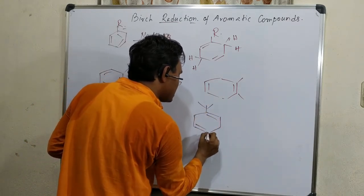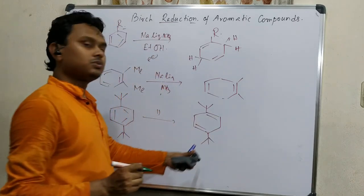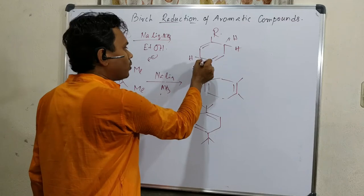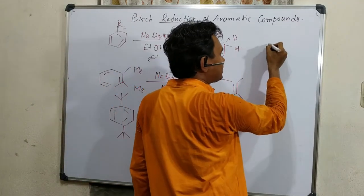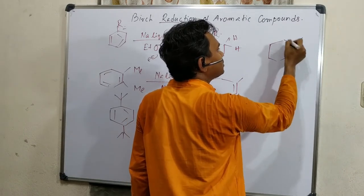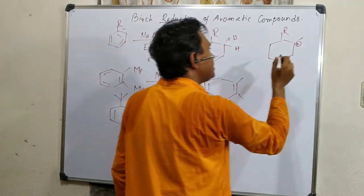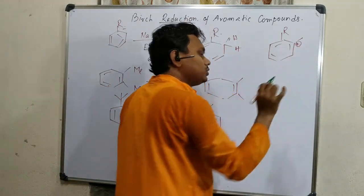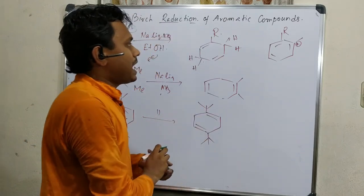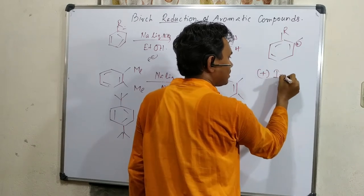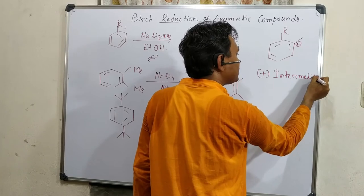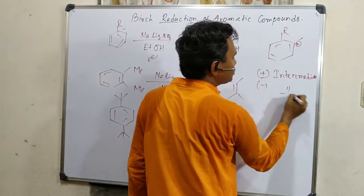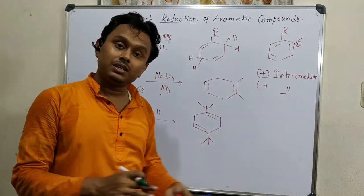It is observed that this reaction is regioselective — depending on the substitution pattern, it produces a specific product. After substitution the negative charge goes to the meta position. But if we check Friedel-Crafts alkylation, the positive charge goes to the ortho position. So Birch reduction is a meta-substituting process, whereas Friedel-Crafts is an ortho-para type process. Friedel-Crafts goes through a cationic intermediate; Birch reduction goes through a carbanion-based intermediate. That is why the selectivity is different in both cases.